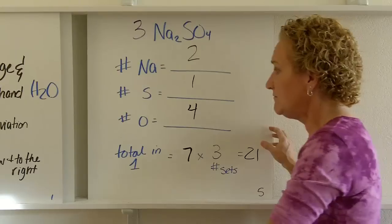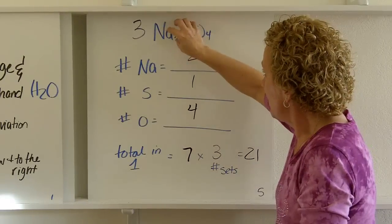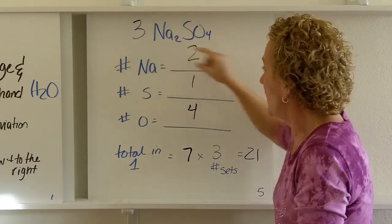So in 3 sets, there's 21 atoms. And it's important that you do them in order. First figure out the amount for 1, and then multiply it by your coefficient.